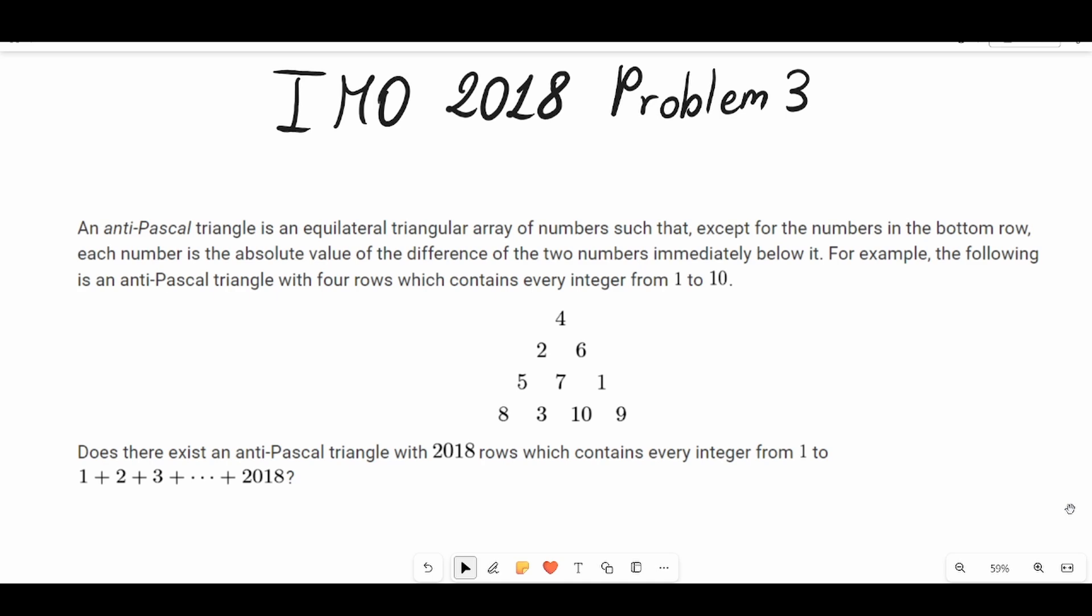In this problem, we are given an anti-Pascal triangle where each number equals the absolute value of the difference of its two bottom neighbors. Like in our case, 4 equals the absolute value of 2 minus 6, and 2 equals the absolute value of 5 minus 7, and 6 equals the absolute value of 7 minus 1. This is an example of an anti-Pascal triangle for n equals 10.